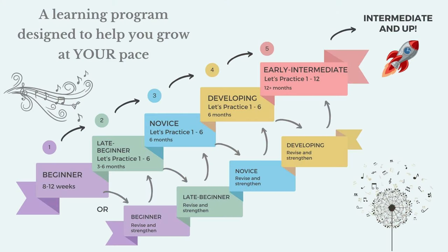A beginner player you would expect to play Baba Black Sheep. An intermediate flutist, on the other hand, is probably playing Handel and Bach sonatas already. So to help fill in these gaps, we created the three levels: novice, then developing, followed by early intermediate. We've got a video down below where we walk through this in a lot of detail and explain exactly what each level is, and show you how you can identify what level you're at.